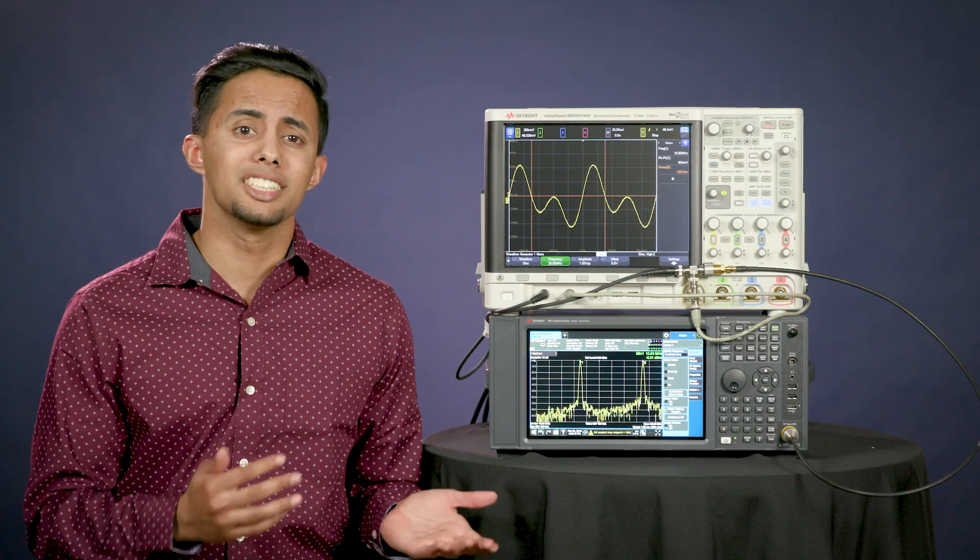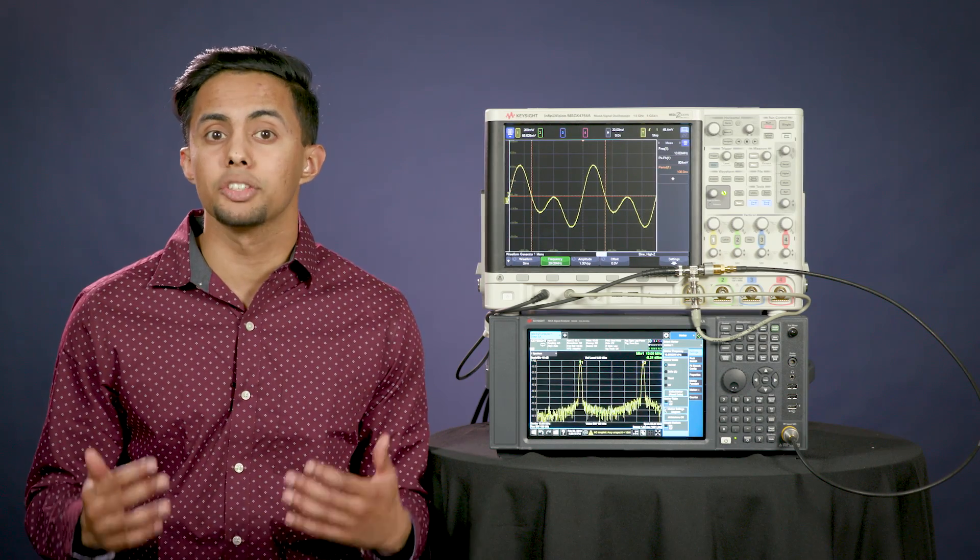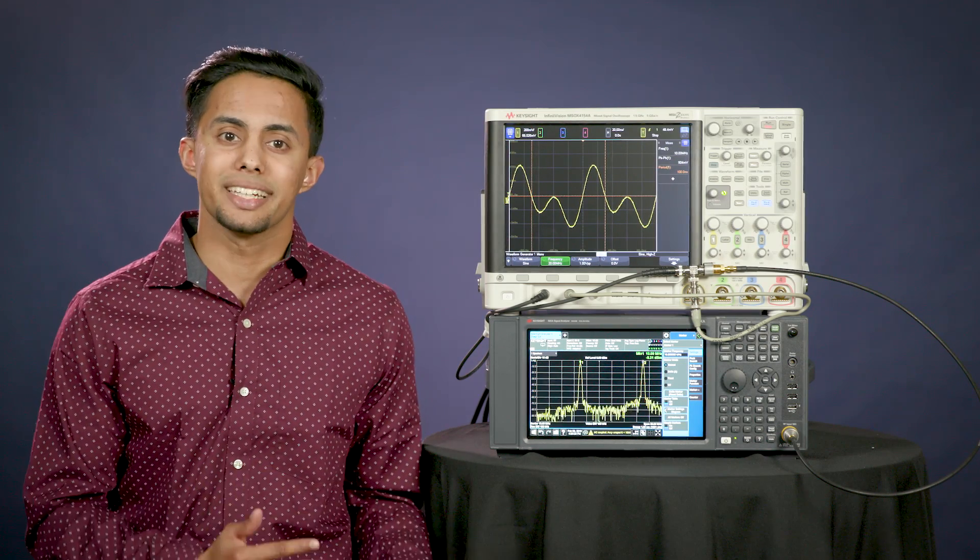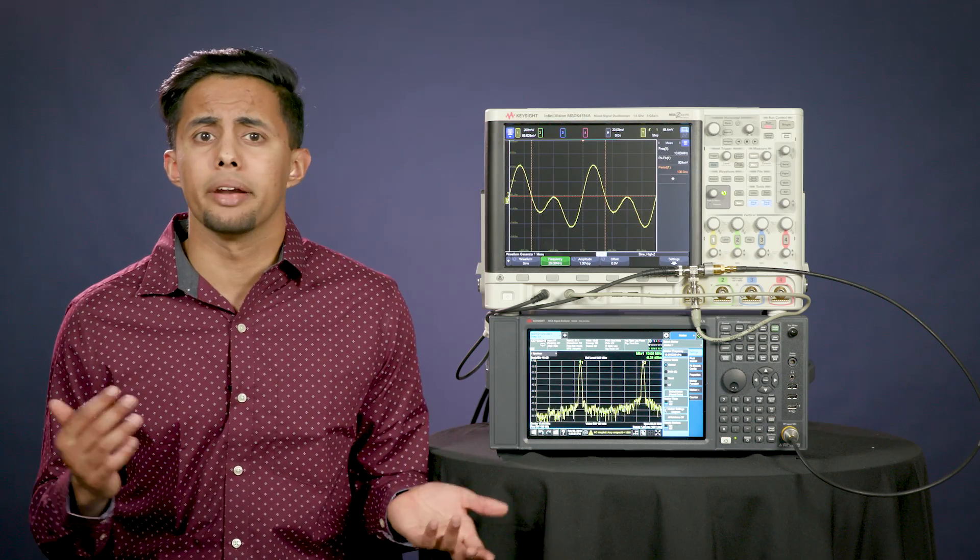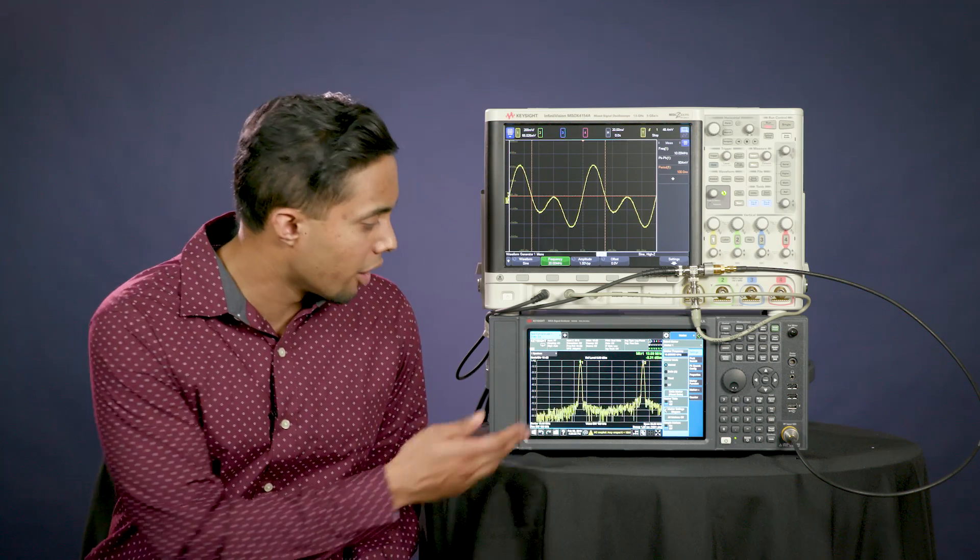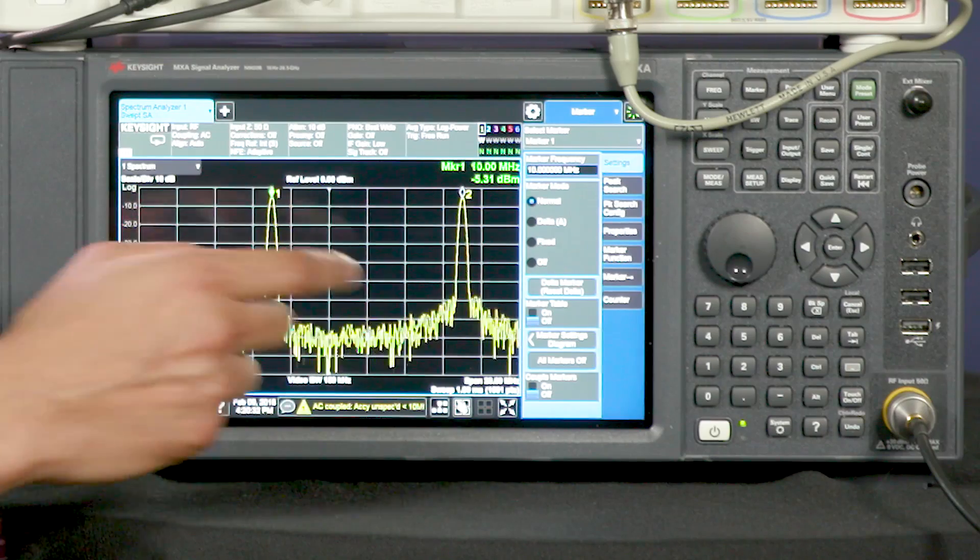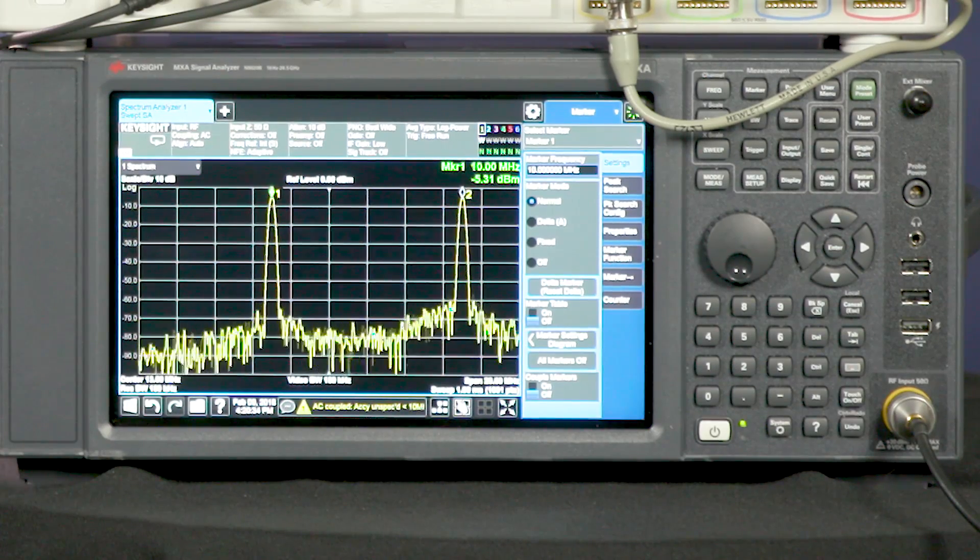They help separate and display this combination of different sinusoidal signals into their distinct frequency components. So that if you were expecting your device to operate at let's say 10 megahertz, you can see all the other frequencies that are messing with your device. For example, this 20 megahertz signal. And once that's figured out, you can use a bandpass filter to tune out those extra annoying signals you weren't expecting.